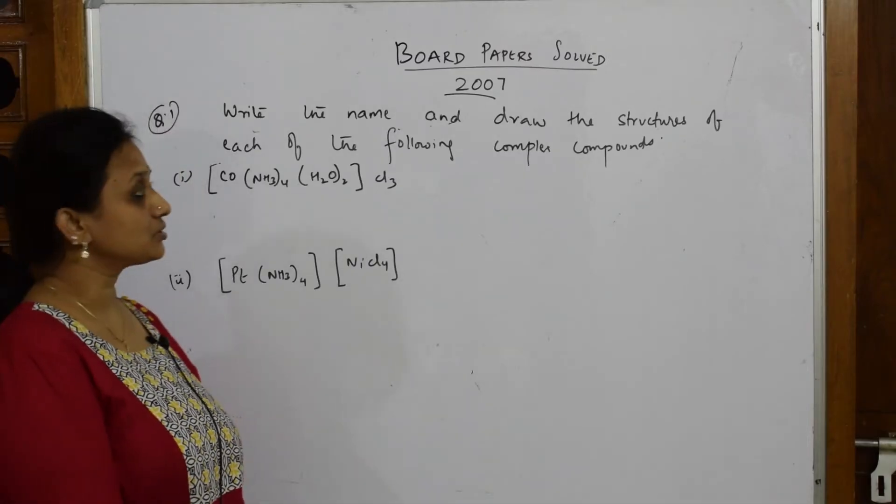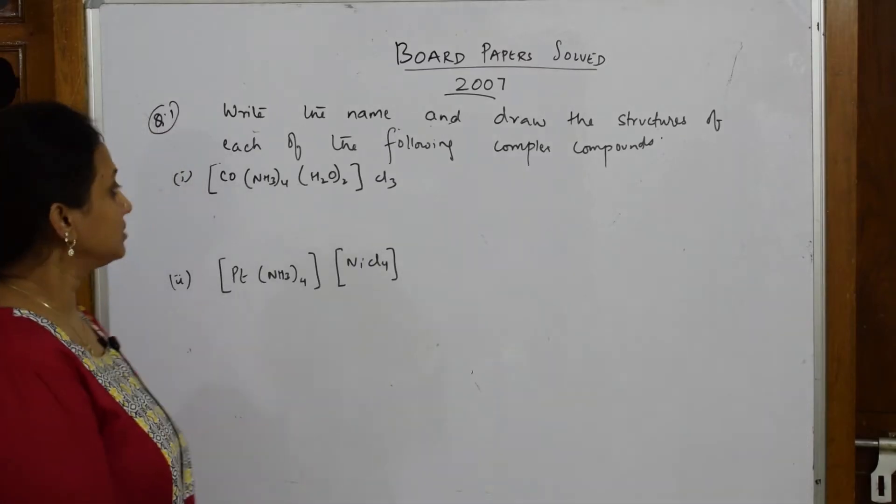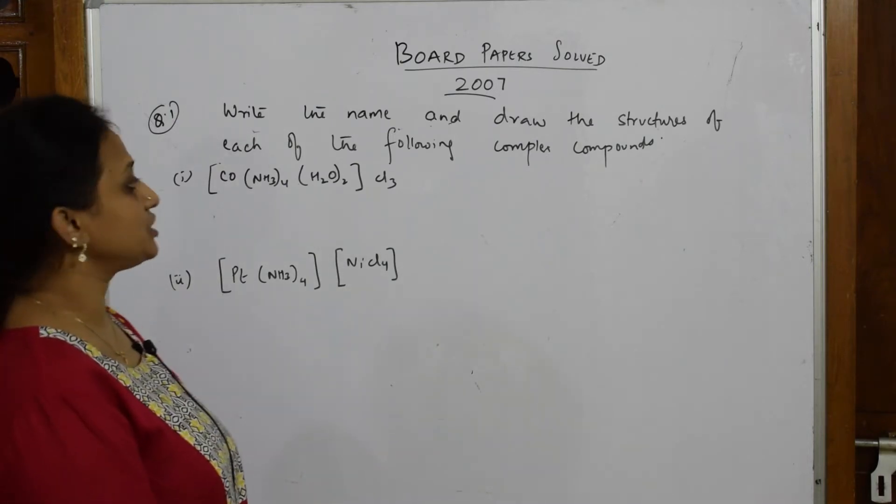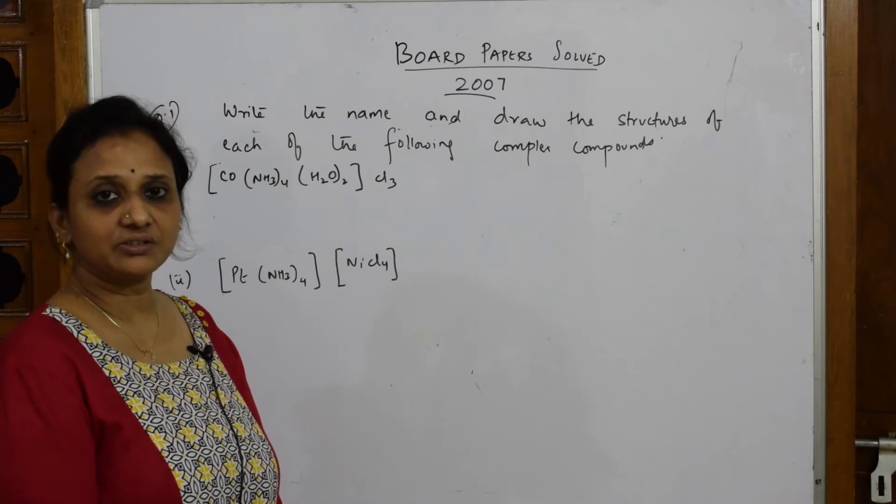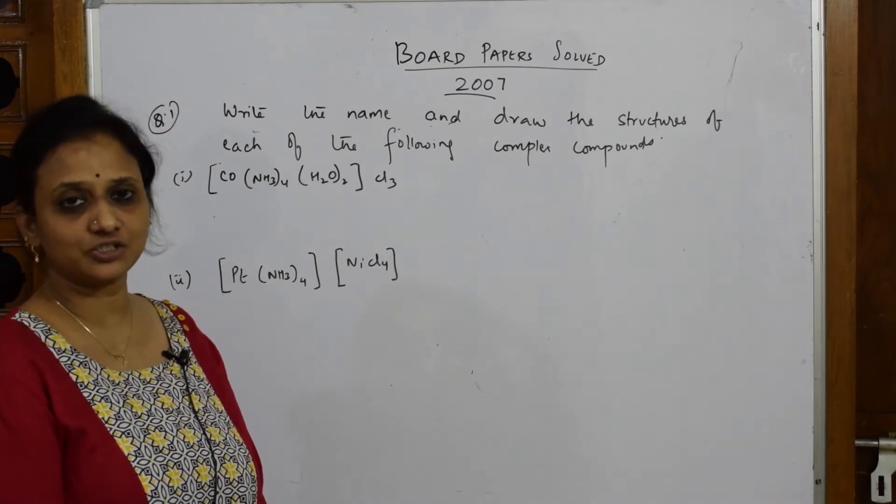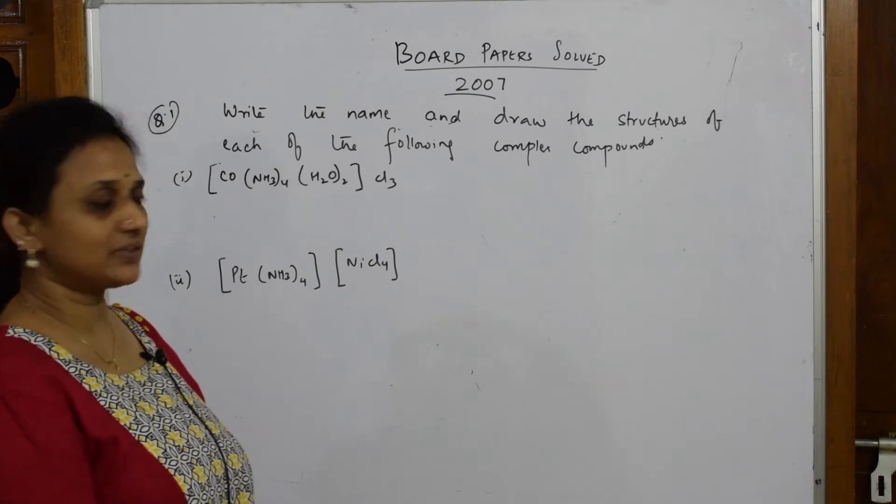Let us come back and start with the 2007 board paper. When I'm seeing this question, they've given write the name and draw the structures of each of the following. This is a quite common question where you'll be asked nomenclature as well as structure. We have already learned the structure, so let's write first the name and then the structure.